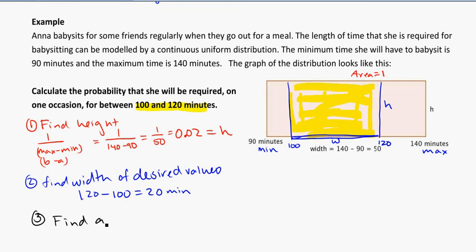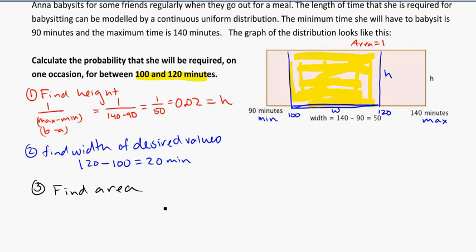Find the area. And in this case, it's going to be height times width, which is going to be 0.02 times 20, and that is equal to 0.4.